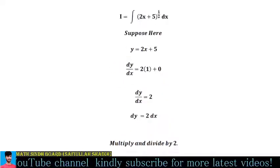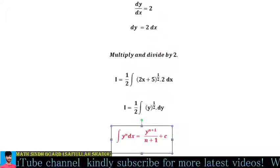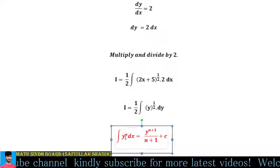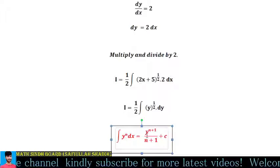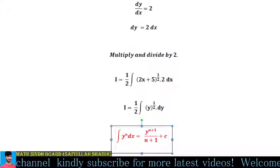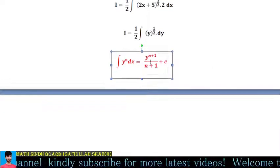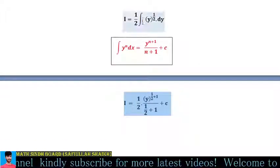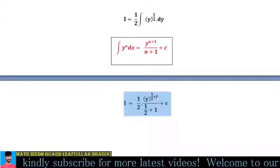Since we have 2x + 5 and we supposed y = 2x + 5, we substitute y. The integral becomes 1/2 times the integral of y^(1/2) dy. Using the power rule, this is 1/2 times y^(1/2 + 1) divided by (1/2 + 1), plus c.